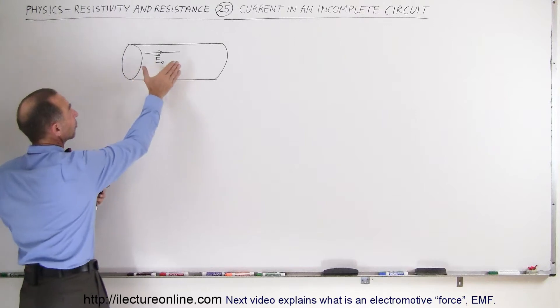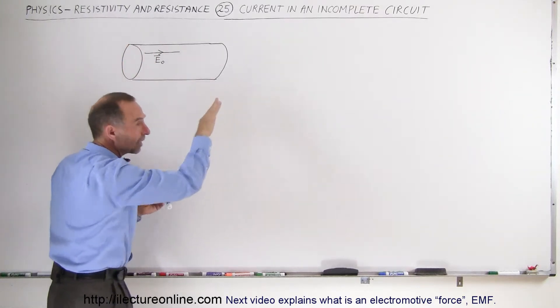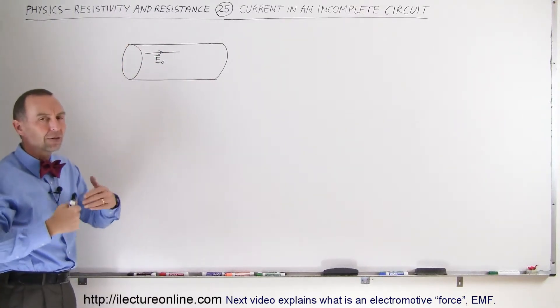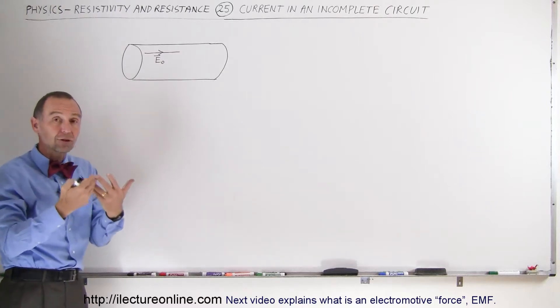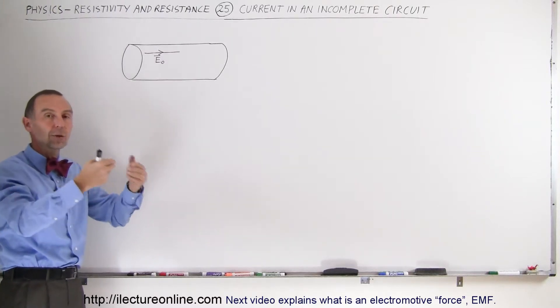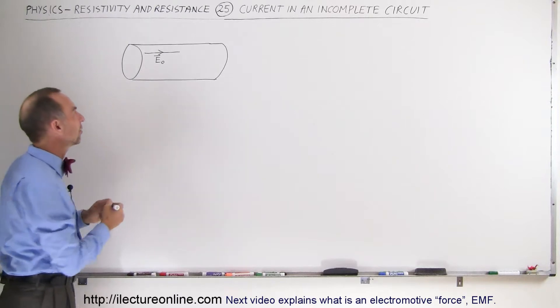When you apply an electric field from left to right, that will start pushing charges towards the right, because obviously if positive charges can move and they're inside an electric field, they will move in the same direction as the electric field.